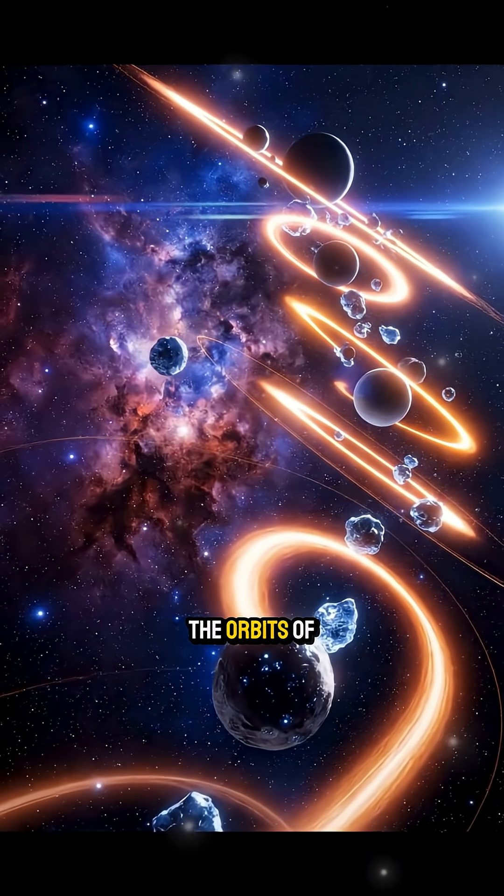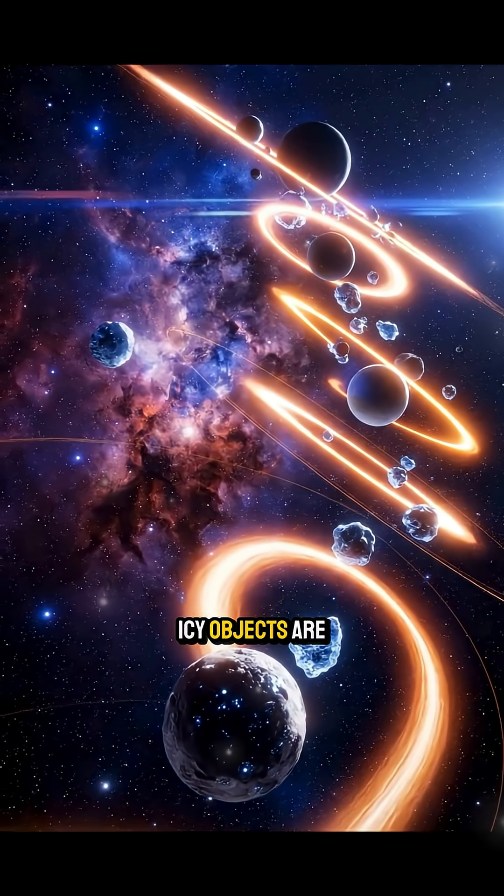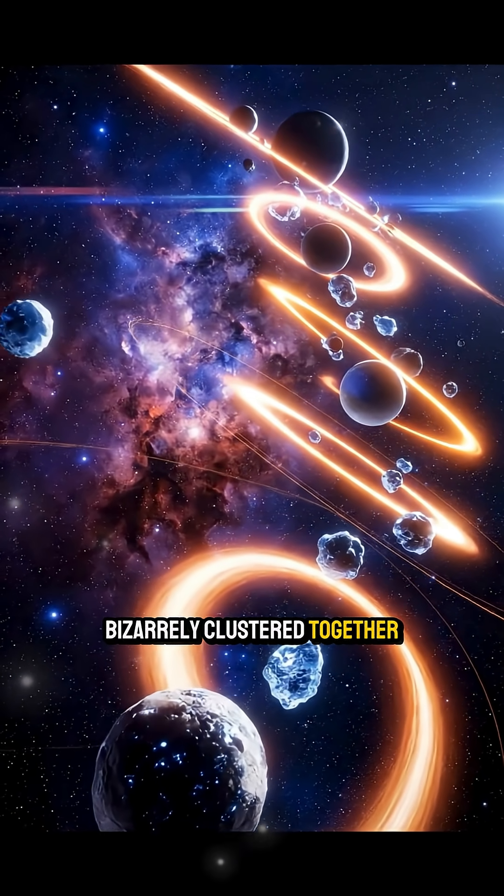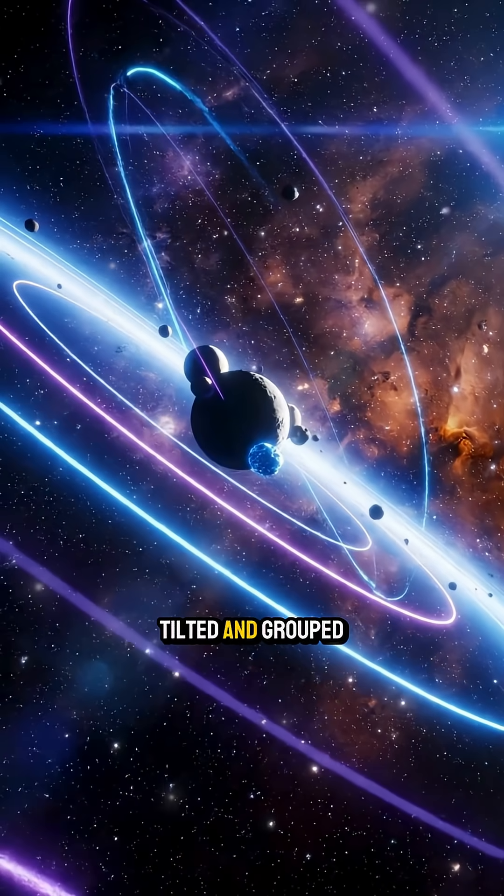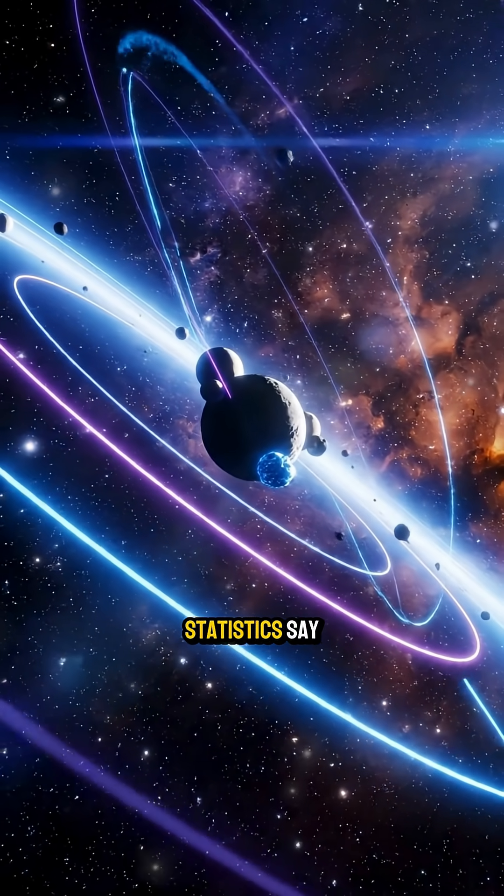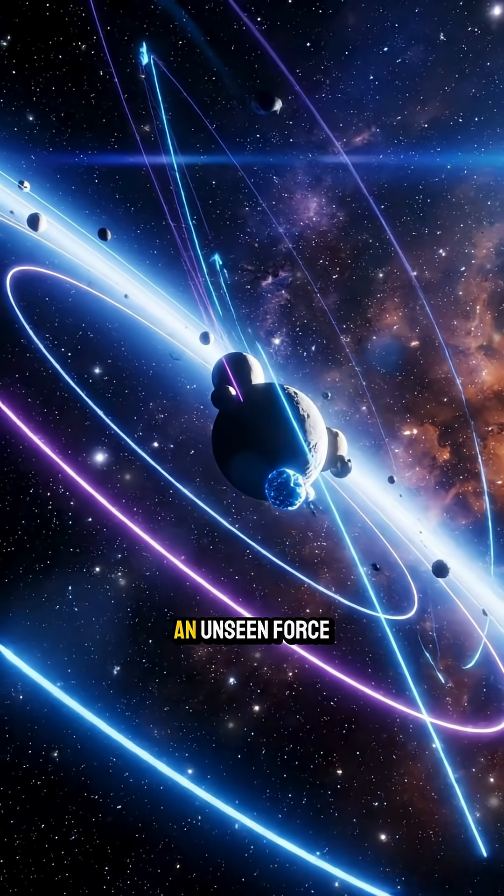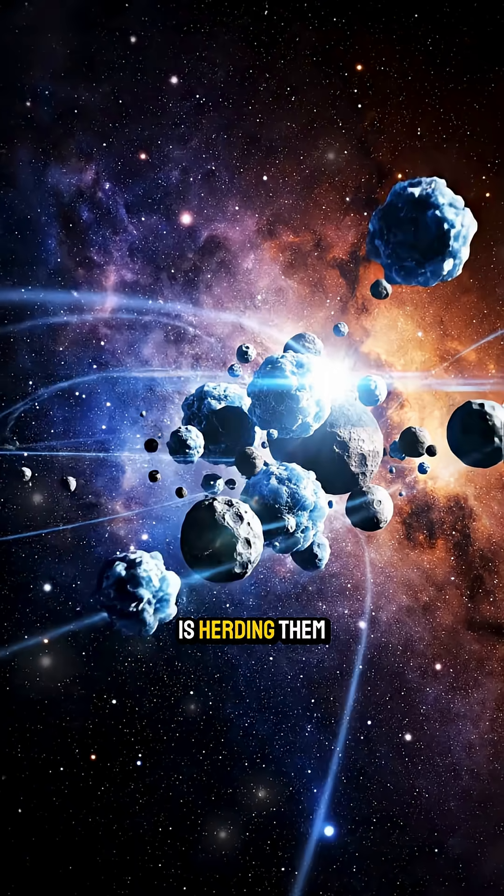Astronomers notice that the orbits of distant icy objects are bizarrely clustered together. They are all tilted and grouped in a way that statistics say is almost impossible. It's as if an unseen force is herding them.